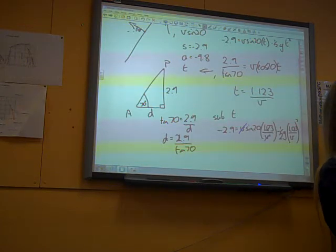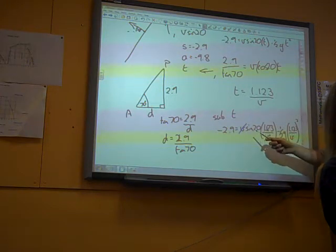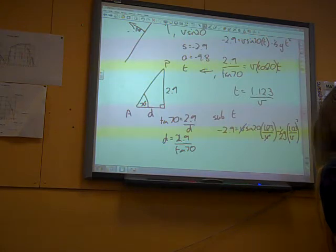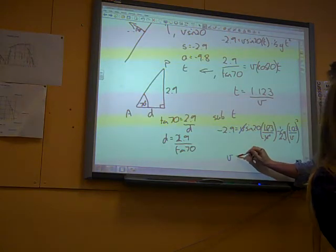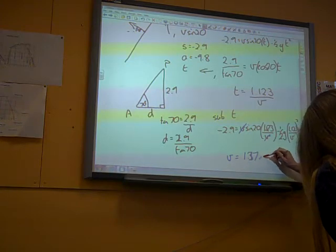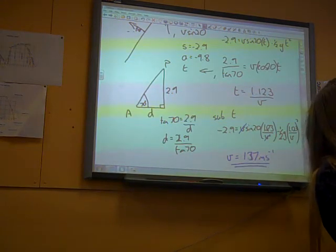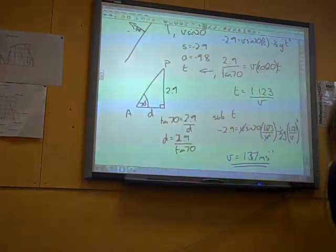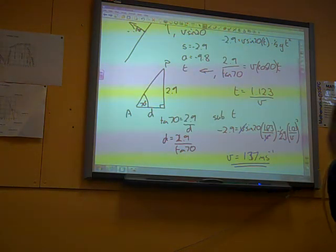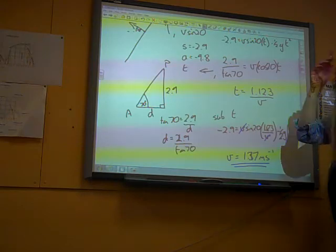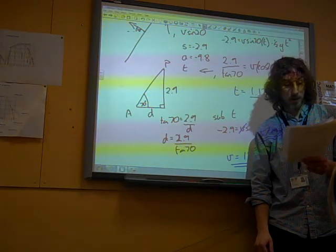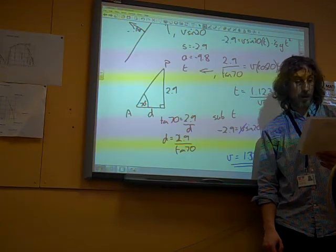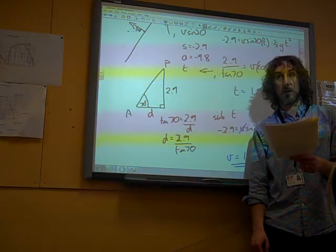Which isn't the nicest equation in the world. V cancels, it takes a little bit of playing around with. You eventually get an expression for 1.123 over v all squared. You then square root and take the reciprocal and times by 1.123. Eventually you get to v is 1.37 meters per second. Now I did say that was not necessarily the best way of doing this or the only way. There was a method using the equation of the path. The mark scheme gives three different ways of doing it.